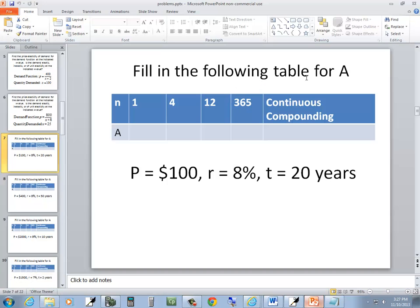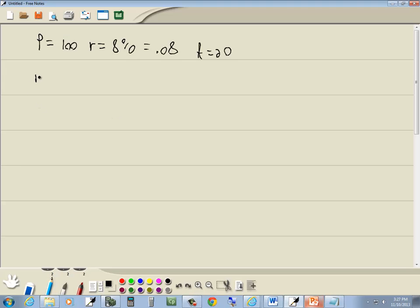Now let's just fill in the whole table for A. In the first one, n is equal to 1. So let's look at it first. Since n is equal to 1 and it's not continuous, then we want to use this formula. A is equal to P times 1 plus R over n to the nt power.